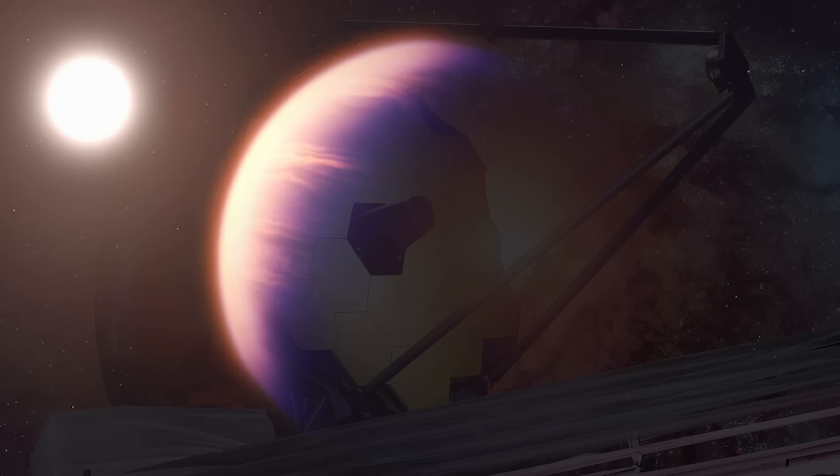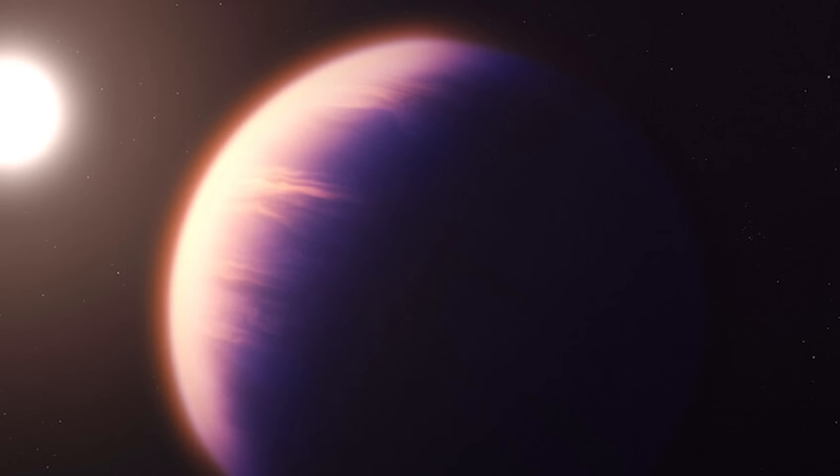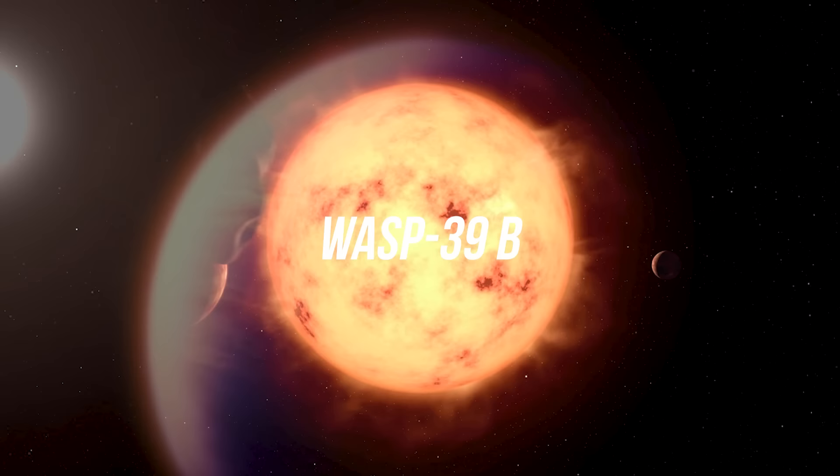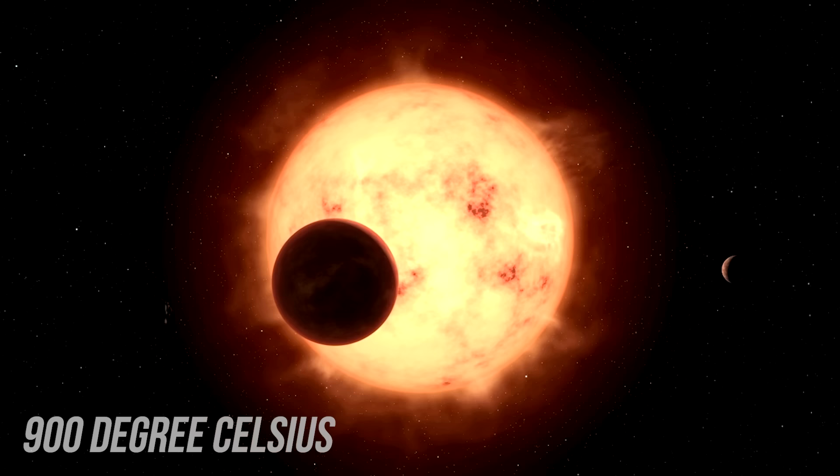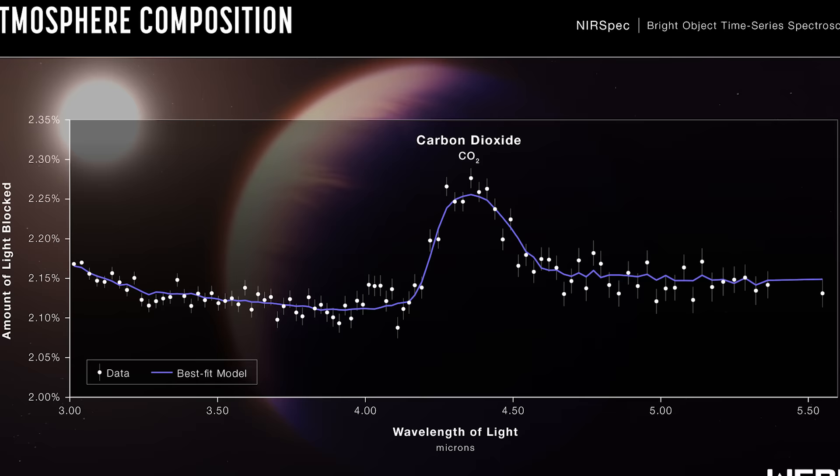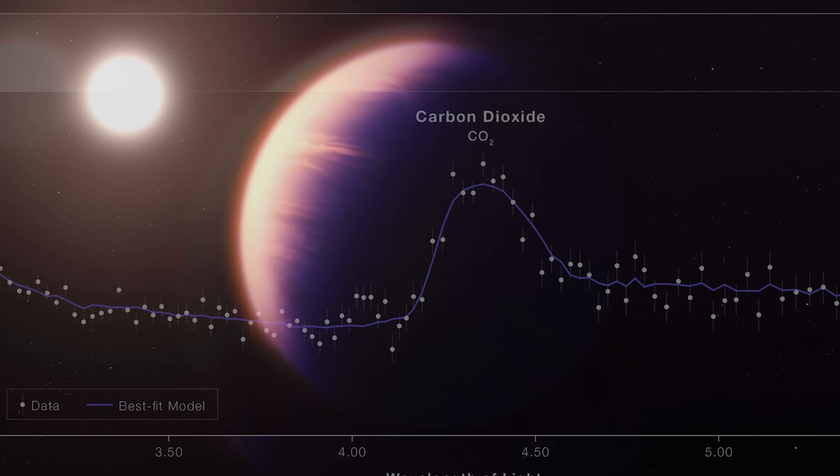Orbiting a sun-like star 700 light-years from Earth, resides a hot gas giant planet roughly the mass of Saturn and the size of Jupiter. Its name is WASP-39b. First discovered in 2011, WASP-39b orbits close to its sun, making it extremely hot with an average temperature of 900 degrees Celsius. A team at John Hopkins University has confirmed the presence of carbon dioxide in WASP-39b's atmosphere, something no observatory has accomplished before.